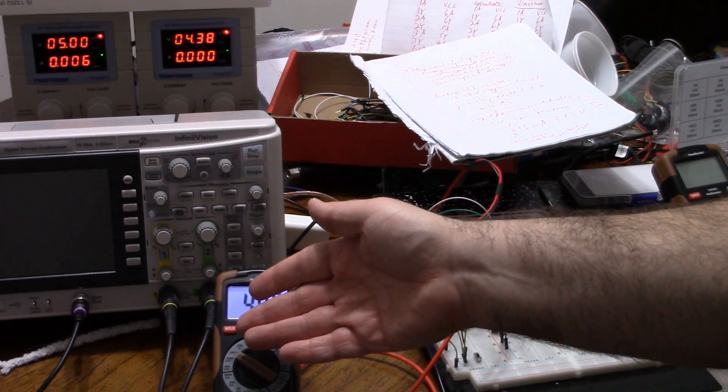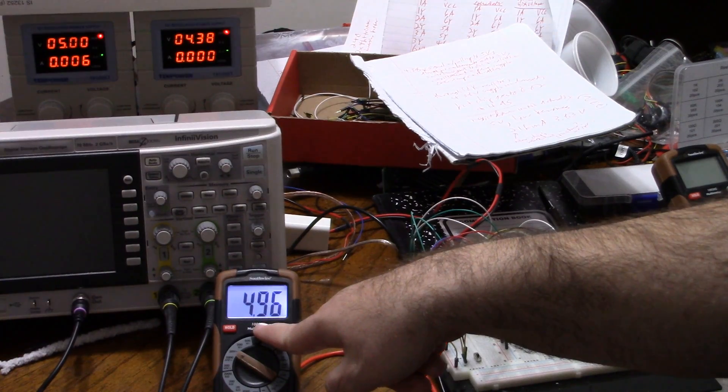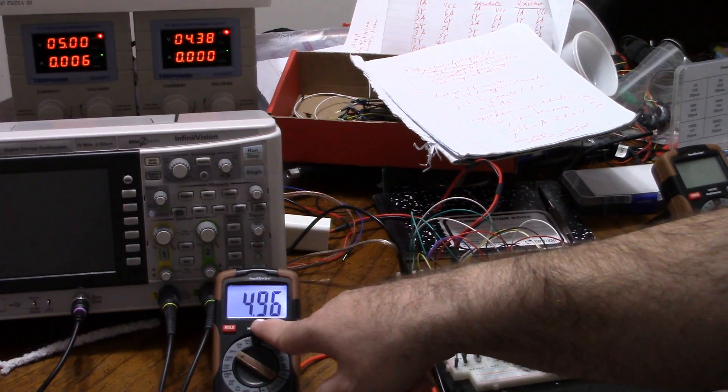It's not 4.99 like we were getting on the timer, but it's still near the rail. It's even within the CMOS range.